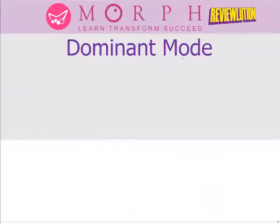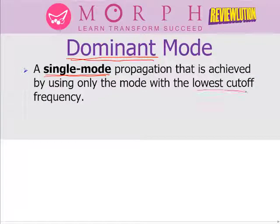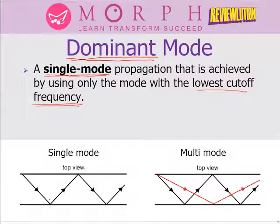Now let's move on to the dominant mode. The dominant mode is the best mode of operation for waveguides. It is a single mode of propagation — meaning only one path for the signal to travel down the waveguide — and it is achieved by using the lowest cutoff frequency. Each waveguide has many cutoff frequencies depending on the mode; using the lowest cutoff gives you the single mode. Single mode has one path; multi-mode has many paths.